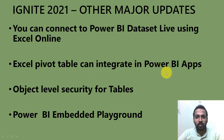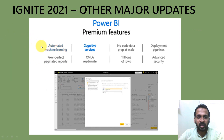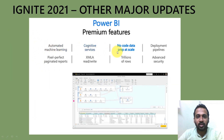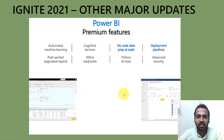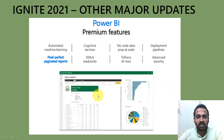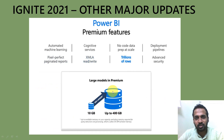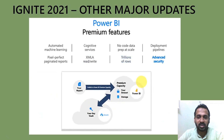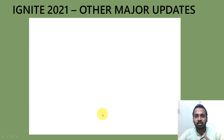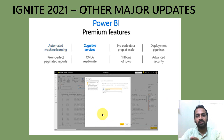Other Ignite releases include Excel pivot tables integrating with Power BI apps, object-level security for tables, and the Power BI Embedded Playground with improvements over the previous version. Power BI Premium Gen 2 features include automated machine learning, cognitive services, no-code data prep at scale, design view, deployment pipelines, pixel-perfect paginated reports, SSRS reports, XMLA read/write endpoints, storage of up to trillions of rows in the large model, and advanced security with bring-your-own-key. These are available for Power BI Premium and Power BI Premium per user, releasing from April 2021.